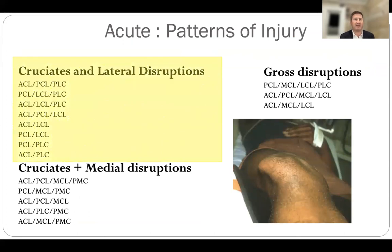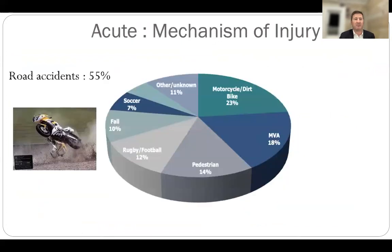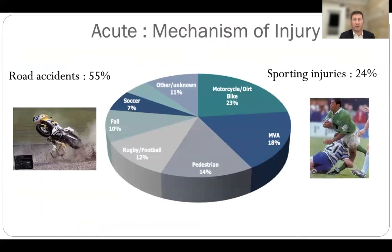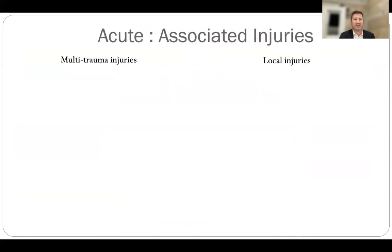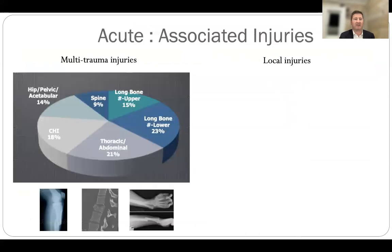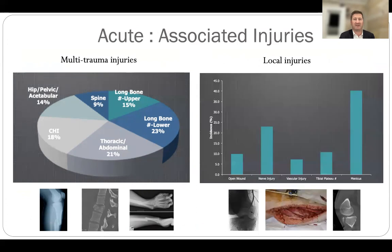In acute injuries the pattern of injury is diverse. Looking at cruciate and lateral disruptions from our database, you can see multiple different combinations of injuries. The mechanism: about half come from motor vehicle accidents, about a quarter from sporting injuries, two-thirds are contact injuries, and about 20% are non-contact. Associated injuries are common, as you'd expect from these high-energy mechanisms.